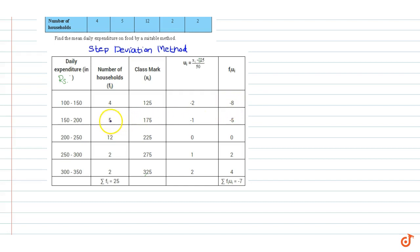Here in the second interval, fi is equal to 5 and ui is equal to minus 1. So 5 into minus 1 is minus 5 and so on.